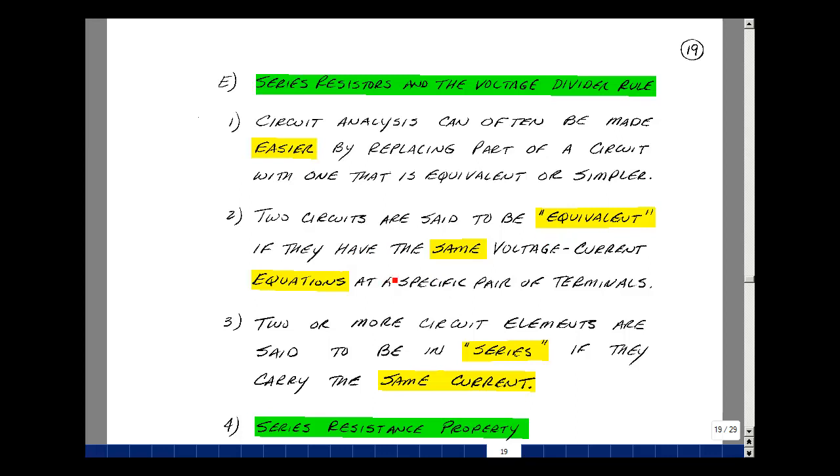Two circuits are said to be equivalent if they have the same voltage current equations at a specific pair of terminals.